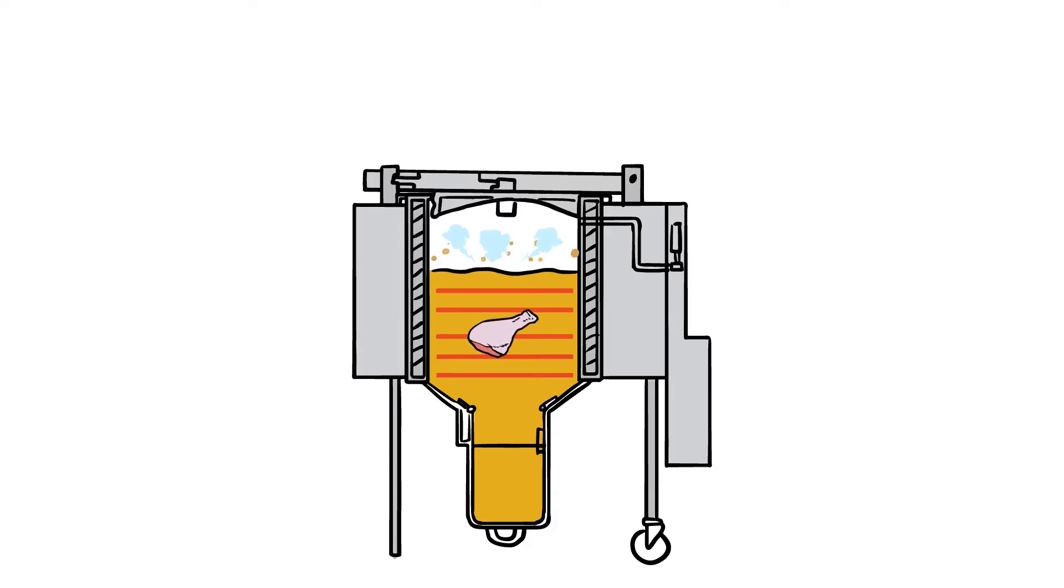While steam is normally 212 degrees, a pressure fryer allows it to get around 250 degrees, which in turn cooks the chicken faster.